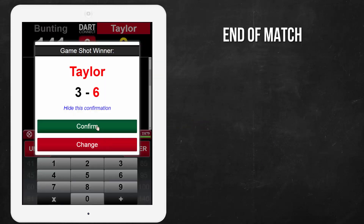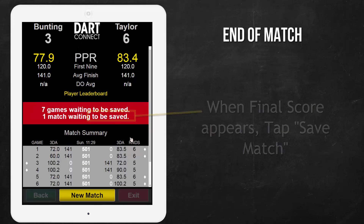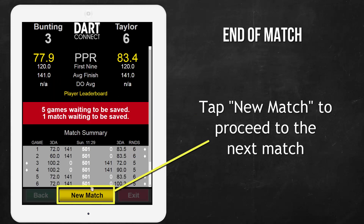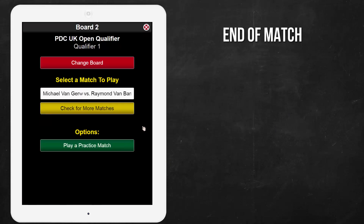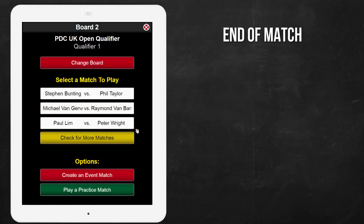When the match is over, you will see a screen showing the final match score. Tap Save Match to officially end the current match. Then tap New Match to return to the match listings. Select the next match to play, or tap Check for more matches to get an updated match list.